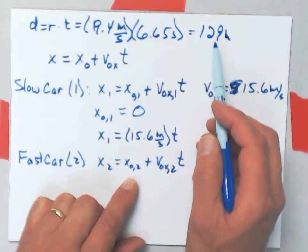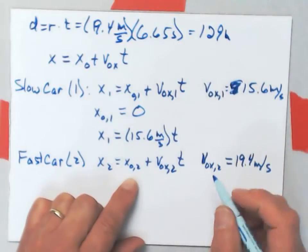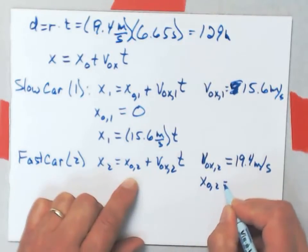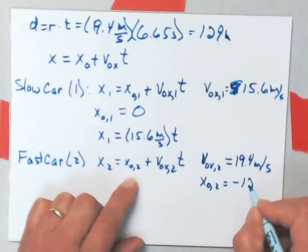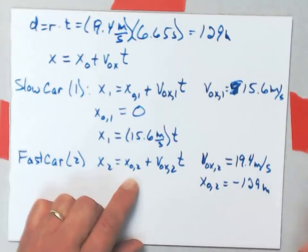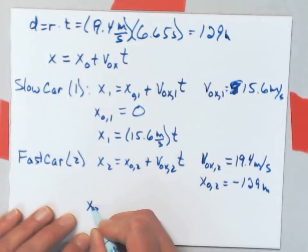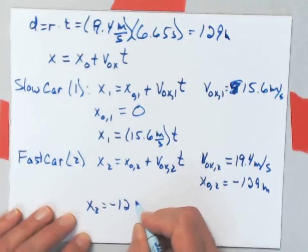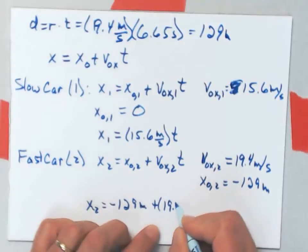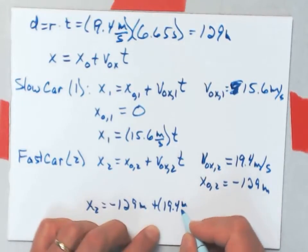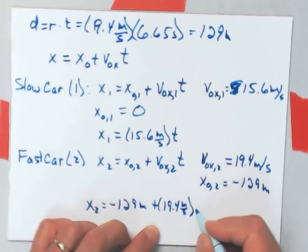And its initial position is what I figured out up here. This is a negative distance. It's behind the intersection at this time. So, x naught for car 2 is minus 129 meters. So, its equation of motion will be x2 is minus 129 meters plus 19.4 meters per second times t.